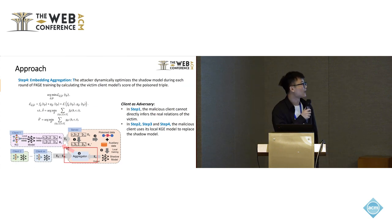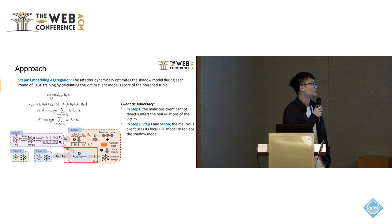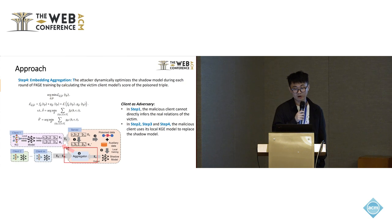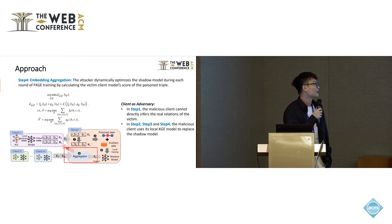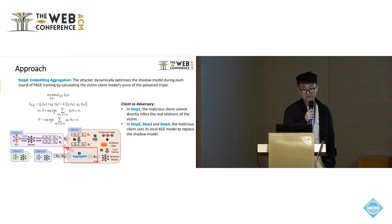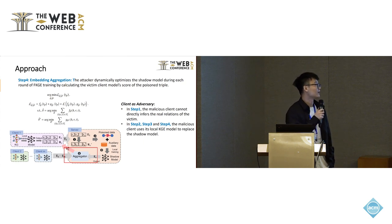If a client is the attacker, there are some differences. First, in step one, the malicious client cannot directly infer the real relation of the victim — it needs to collude with the server to get the victim client's entity set. In steps two to four, the malicious client uses its local KGE model to replace the shadow model.